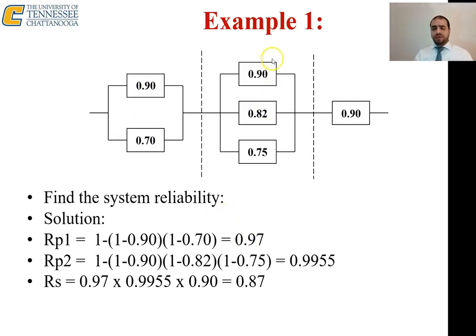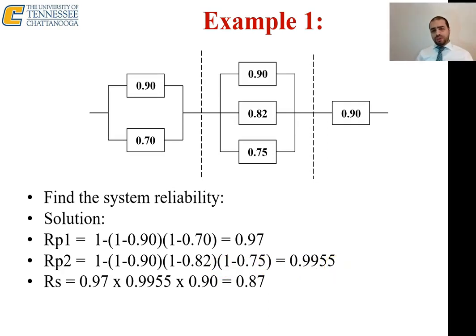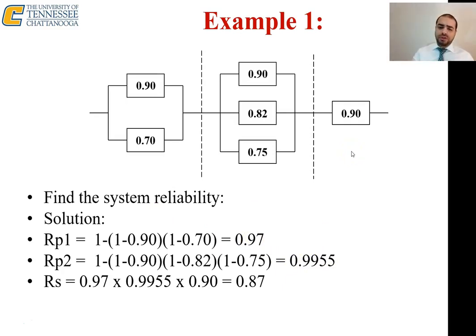The next section has three components in parallel, which will give a high result. Applying the formula: 1 − (1 − 0.9)(1 − 0.8)(1 − 0.75) = 0.9955. The third standalone component has reliability 0.9. Now these three subsystems — 0.97, 0.9955, and 0.9 — are in series. Multiplying them gives 0.87, which is lower than the lowest individual value, as expected.